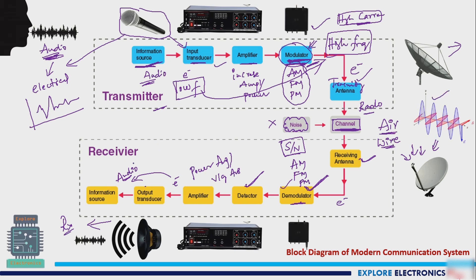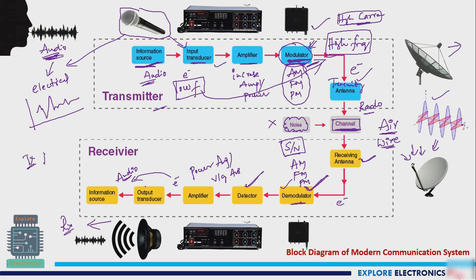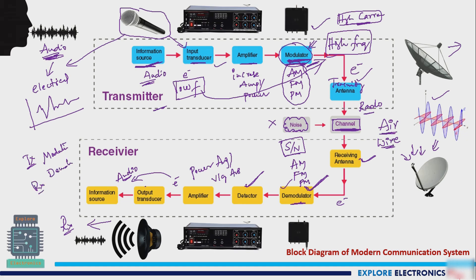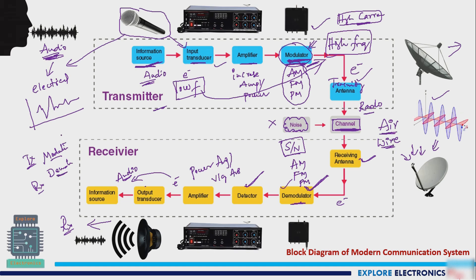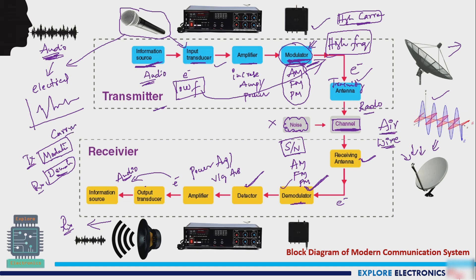This is the general communication system. From the source, we perform a transmitting mechanism called modulation. At the receiver end, we perform demodulation to receive the same signal. This modulation and demodulation process adds or removes a carrier signal.